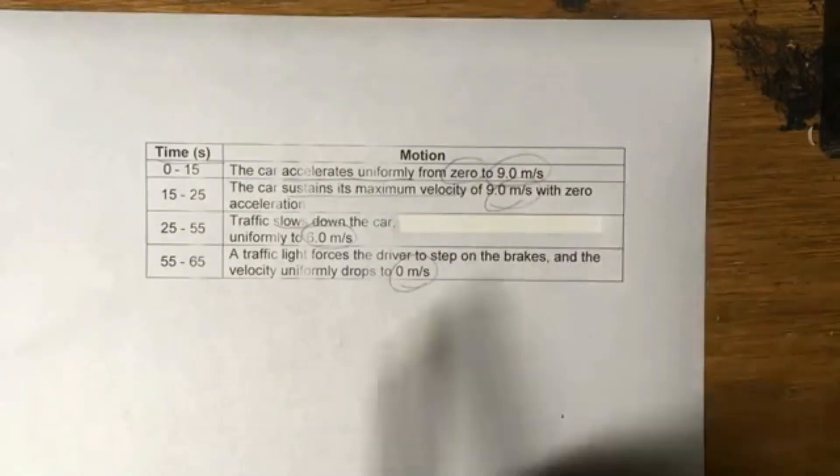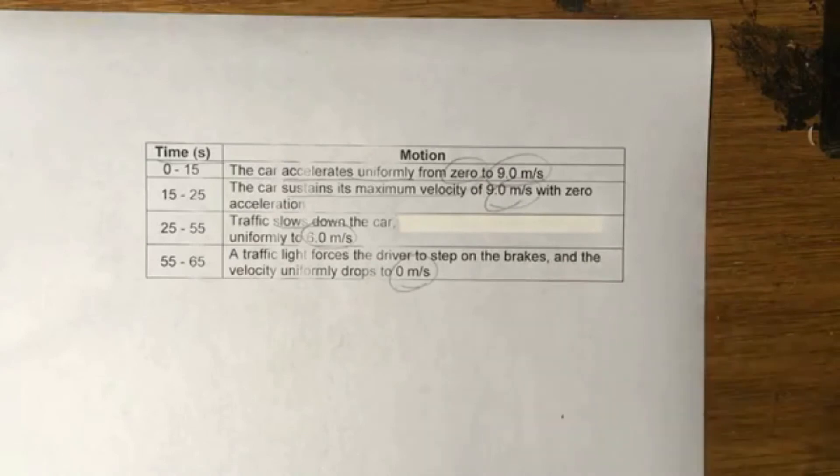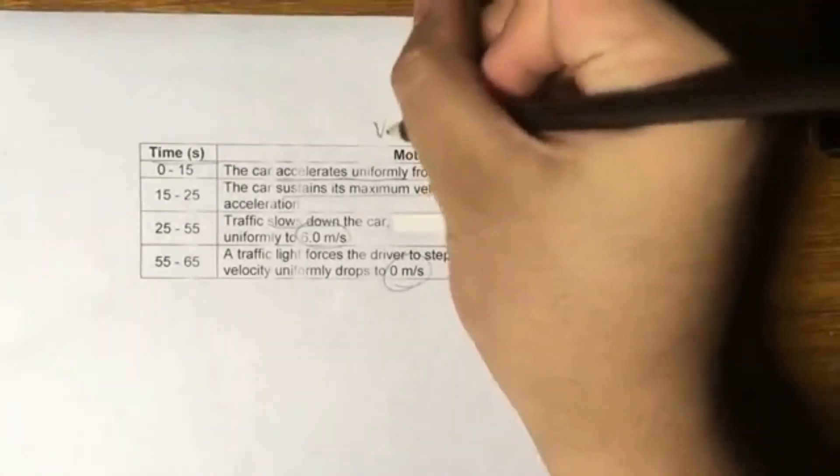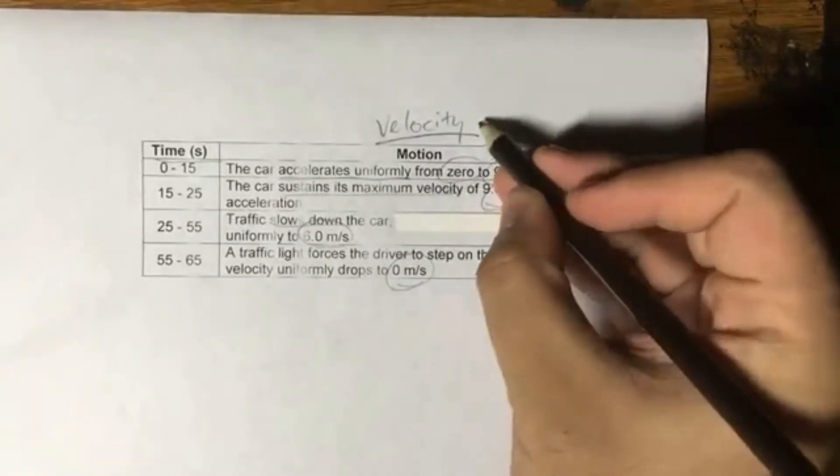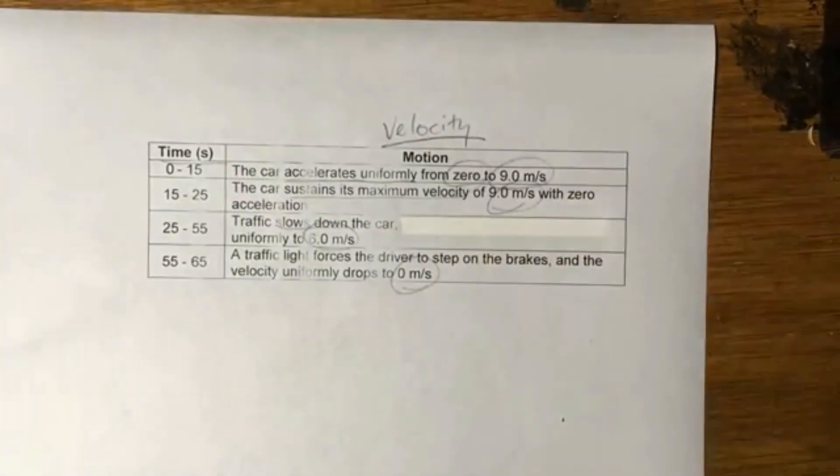Well, zero to 9 meters per second, 6 meters per second, zero meters per second. Most likely, you'll have to deal with velocity first. And then the plan of action would be to transform that into the other graphs.